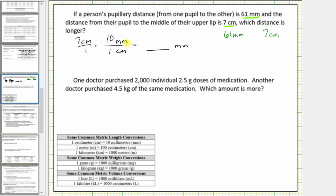Notice the units of centimeters simplify to one, leaving us with the product of seven times ten millimeters, or seventy millimeters. Because seven centimeters equals seventy millimeters, we answer the question by comparing sixty-one millimeters to seventy millimeters. Because sixty-one millimeters is less than seventy millimeters, we now know that sixty-one millimeters is less than seven centimeters. Therefore, seven centimeters is the longer distance.